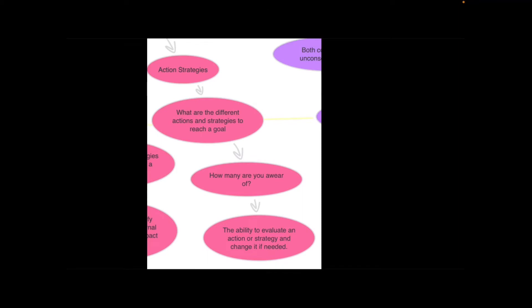The last area was what he called action strategies and these are a little bit higher level strategies that really have to do with how much do you know about the task that you are trying to do. Are you aware of the other strategies that are out there and the other ways of doing things.